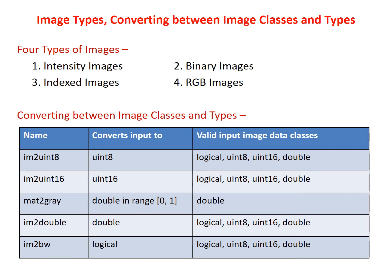Now we will see image types. There are four types of images: intensity images, binary images, indexed images, and RGB images. An intensity image is a data matrix whose values have been scaled to represent intensities. When the elements are of class uint8 or uint16, they have integer values in the range 0 to 255 and 0 to 65535 respectively. If the image is of class double, the values are floating point numbers in the range 0 to 1.